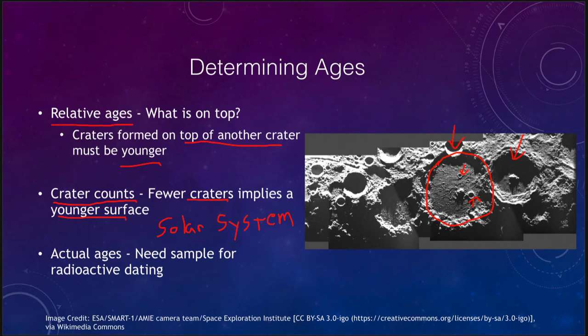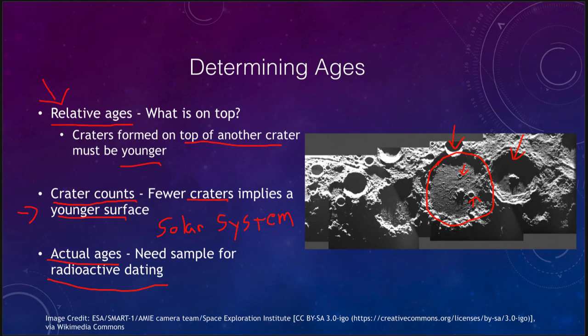Things like the highlands of the moon are very old surfaces because there are lots of impact craters, in fact to the point where they overlap each other. Now if we want to determine the actual ages we need to get samples — all of the Apollo missions brought back samples of the moon to be radioactively dated to determine the ages of those sites. That gives us a precise age, but crater counts work for anything we can observe, and we can always determine relative ages — what is younger and what is older — by looking at what is on top.